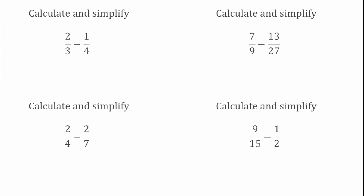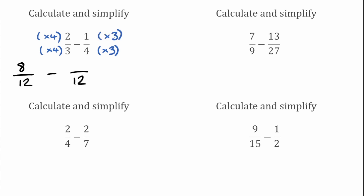For our first example we've got 2 over 3 take away 1 over 4. Again looking for the lowest common multiple of 3 and 4, that would be 12, so we want two fractions that are both over 12. To get 12 on the bottom we'd have had to multiply by 4, so we do the same to the top: 2 multiplied by 4 gives 8. On the right hand side we had 4, multiplied by 3 to get 12, so 1 times 3 gives 3. We're left with 8 over 12 take away 3 over 12, so our final answer would be 5 over 12.